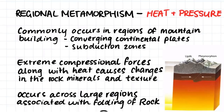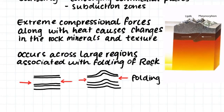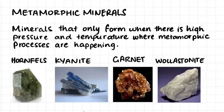Unlike contact metamorphism, regional metamorphism occurs across very large regions and is associated with the folding of rock. The rock will fold because of the compressional forces acting upon it and the high temperatures to which the rock is subjected. The high temperatures and great pressures force the rock to fold and bend. There are also a few minerals which are only really present in metamorphic rocks.